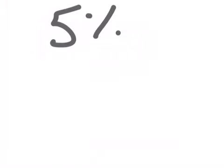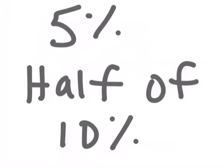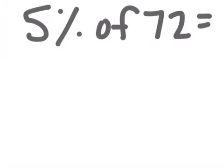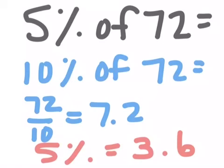If we want to figure out what 5% is, I simply have to halve what I already know as 10%. So for example, if I was looking for 5% of 72, I know that 10% of 72 is 72 tenths or 7.2. And to find 5%, I just halve that. So 5% would be 3.6.